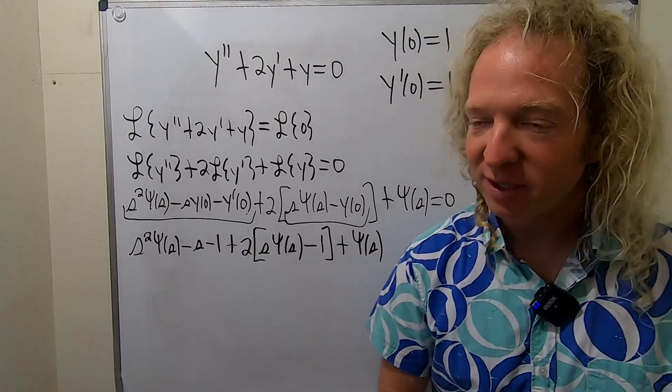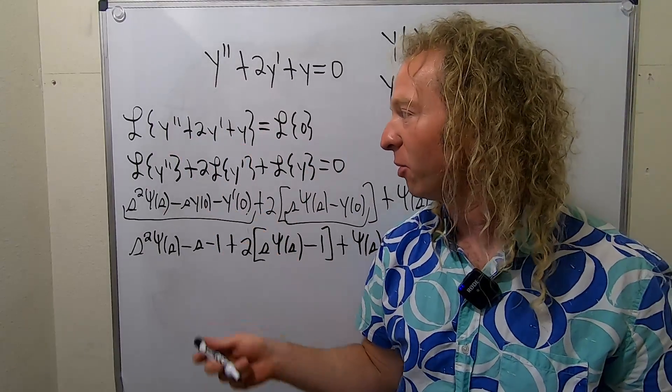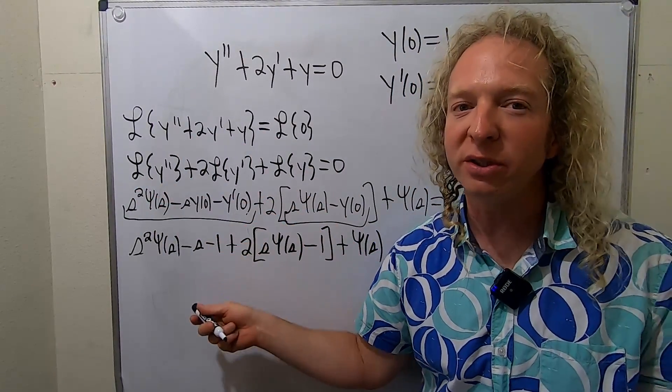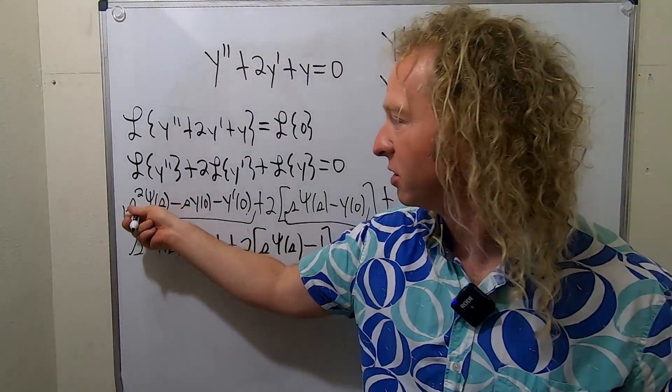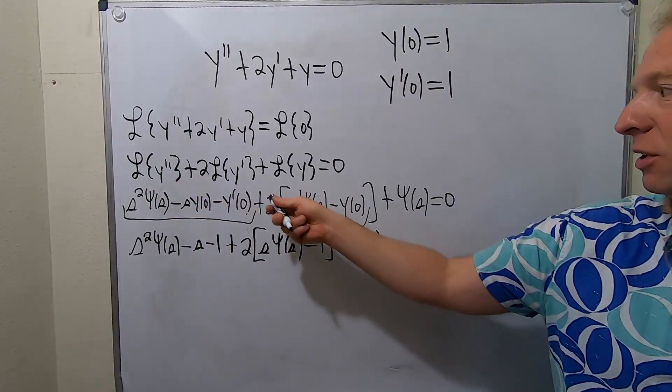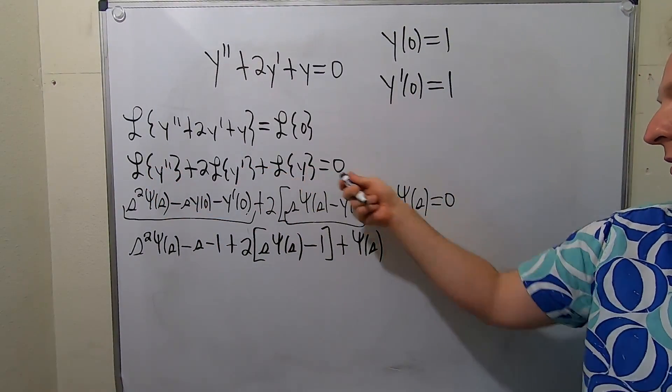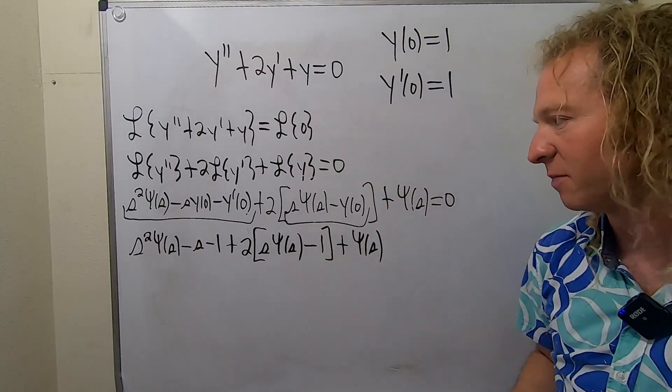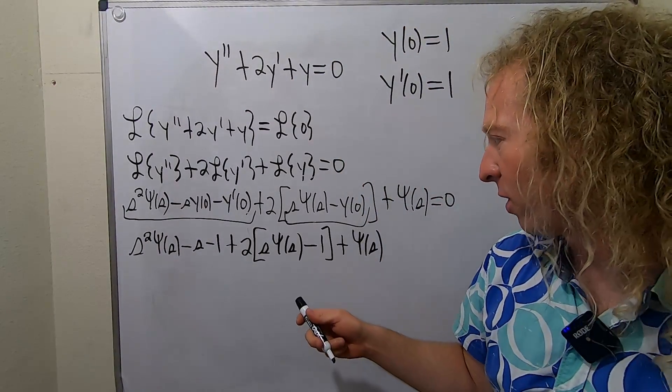Again, recap. Step one, take the Laplace of this bad boy. Apply these formulas. These are really the only two you'll need most of the time. You'll need this one for Y double prime. You'll need this one for Y prime. And then this one is just Y of S. Now we have to solve for pitchfork Y.